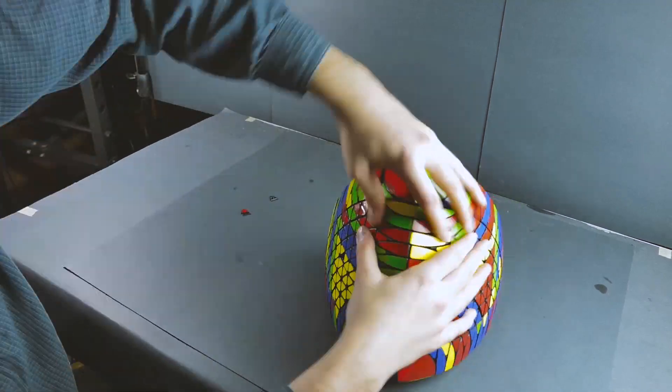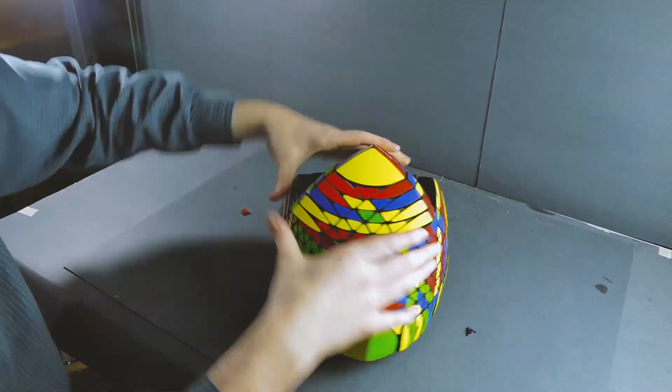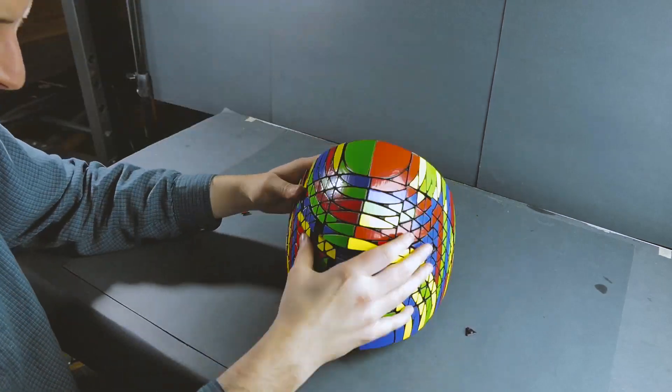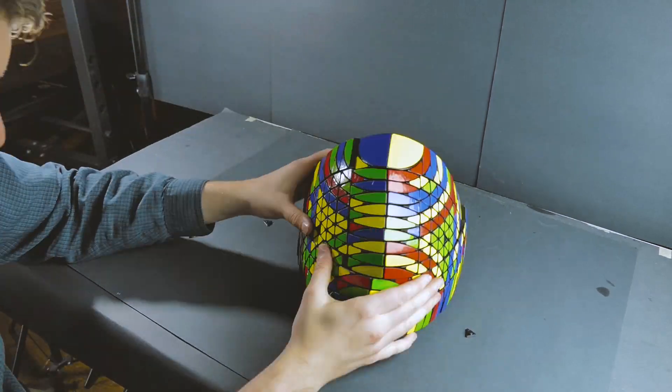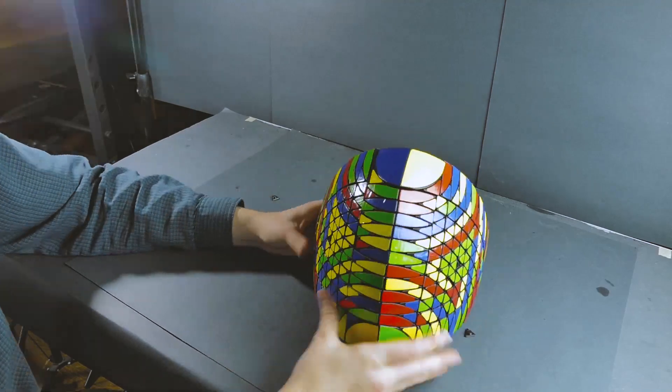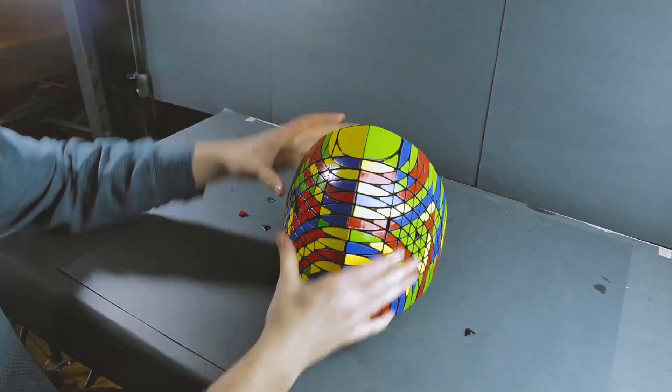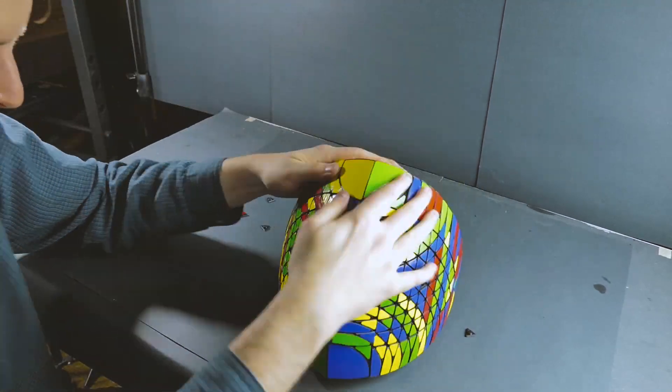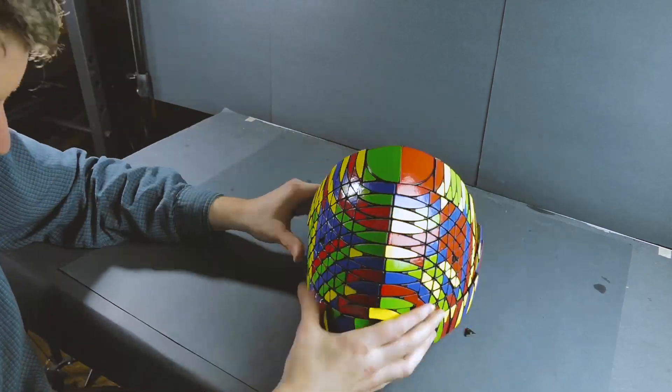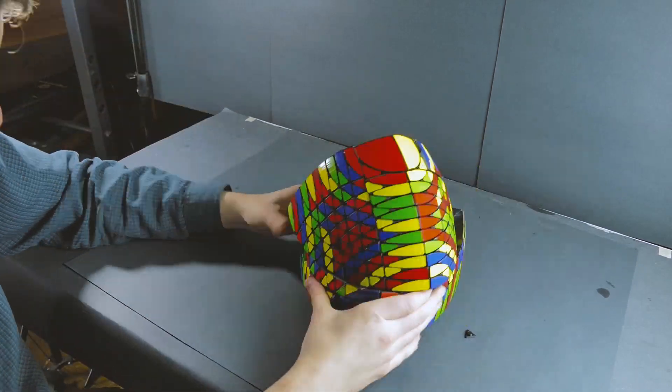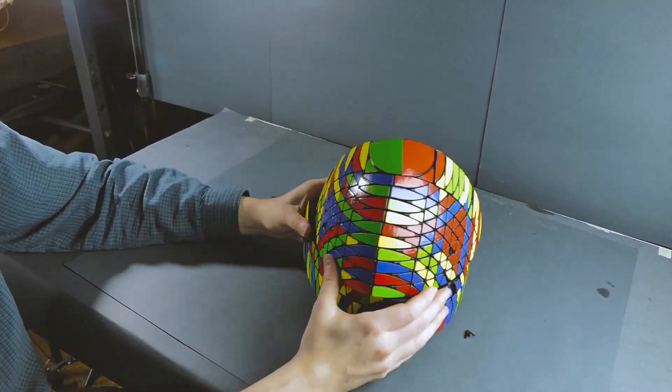You might be wondering why the center caps keep falling off. I eventually do plan on gluing them in. They're just meant to be kind of a temporary little thing. There's screws inside those centers, and you might notice those screws don't actually screw into the core. They're sort of floating centers.